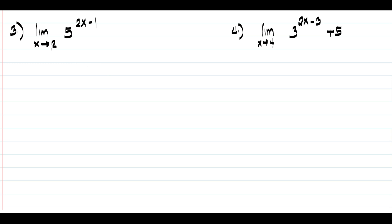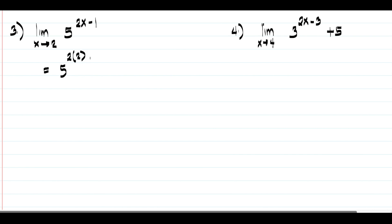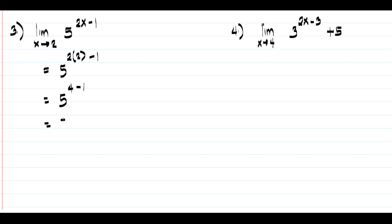In example number three, we have the limit of 5 raised to 2x minus 1 as x approaches 2. Substituting gives us 5 raised to 2 times 2 minus 1, which is 5 raised to 4 minus 1, that is 5 raised to 3, and 5 raised to 3 is 125. That is our answer.